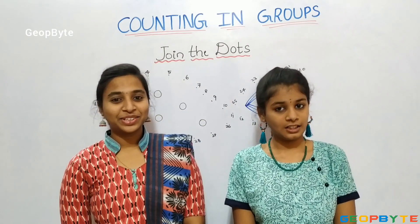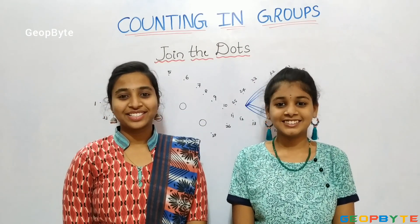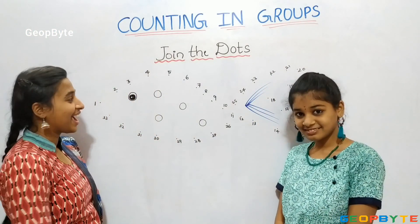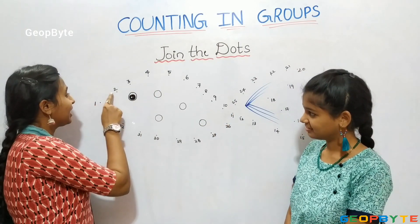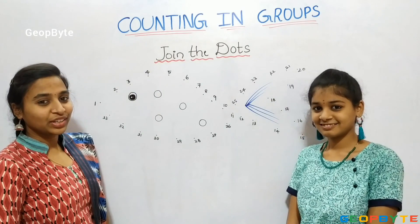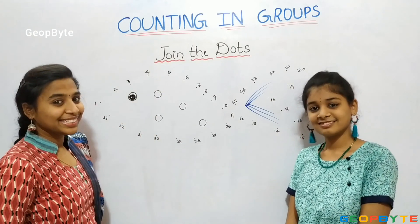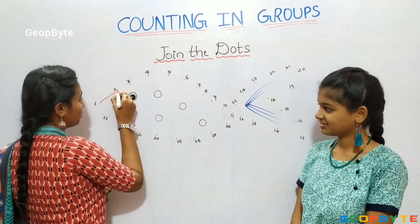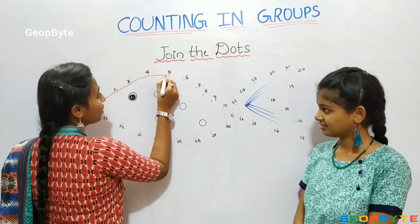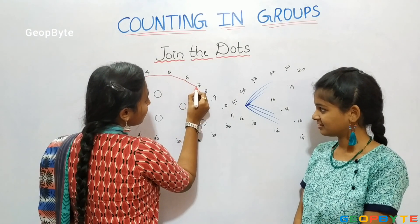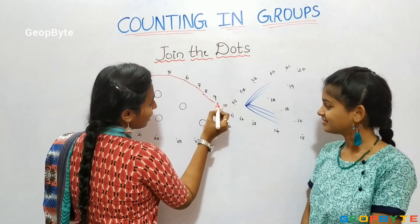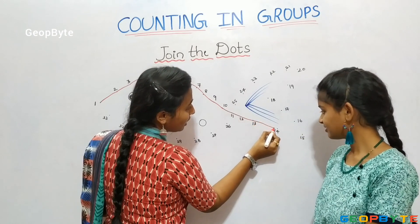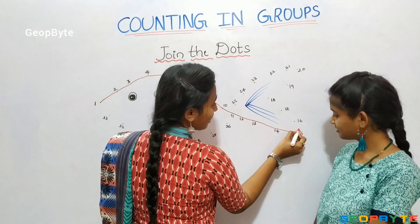Now, let us get into the topic: join the dots. Hey kids, see here. I have few dots with indicating numbers. Now, I will join the dots according to the numbers. This is 1. I will start from 1. 1, 2, 3, 4, 5, 6, 7, 8, 9, 10, 11, 12, 13, 14, 15, 16.